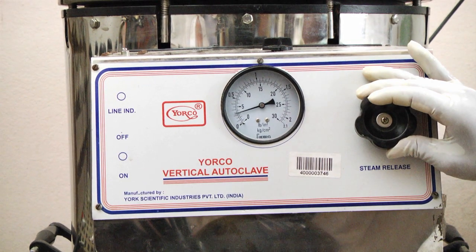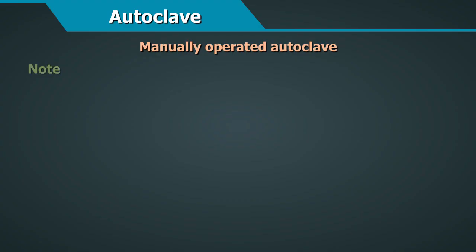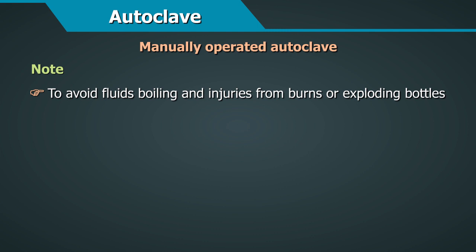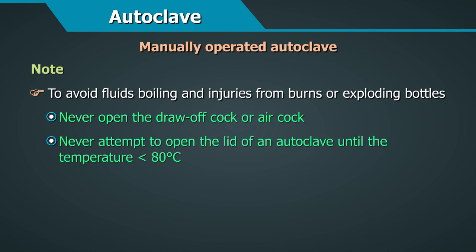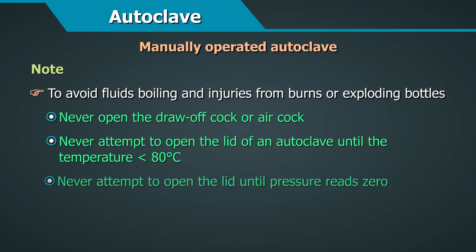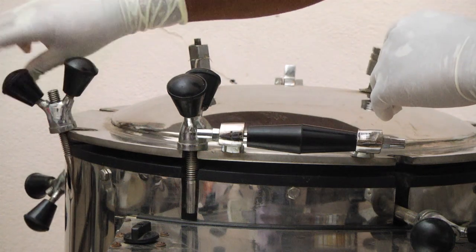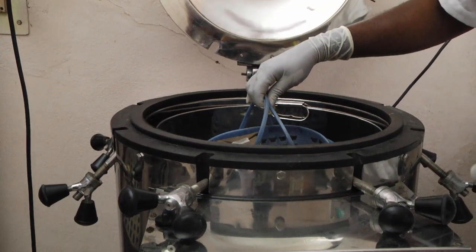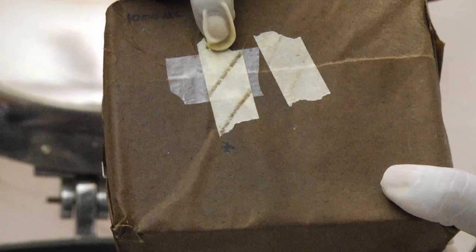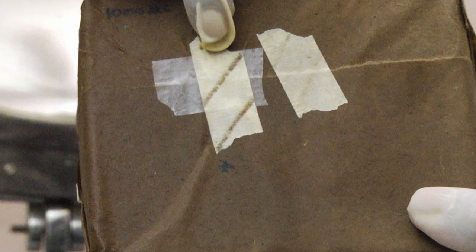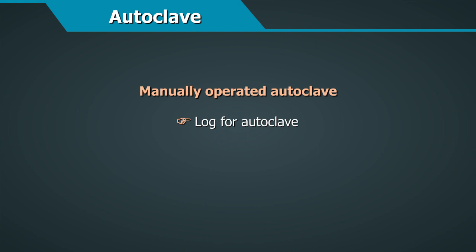Open the air cock and wait a few minutes before opening the lid. Important: to avoid fluids boiling and injuries from burns or exploding bottles, never open the draw-off cock or air cock or attempt to open the lid of an autoclave until the temperature has fallen below 80 degrees centigrade and the pressure reads zero. Some models of electric autoclave are fitted with a thermal lock that prevents opening when still under pressure. Open the lid as instructed by the manufacturer, carefully unload it, and check the process control strip to ensure sterilization has been satisfactory.